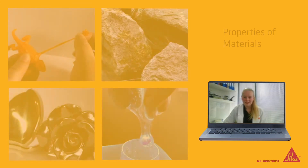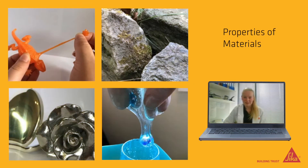Different materials have different properties. Some are stretchy, some are hard, some are shiny and some are sticky. When we are designing a new building material, we have to test its properties to check that it will do what we want. Imagine a glue that doesn't stick, or a roof that melts in the sun, or a paint that doesn't dry.